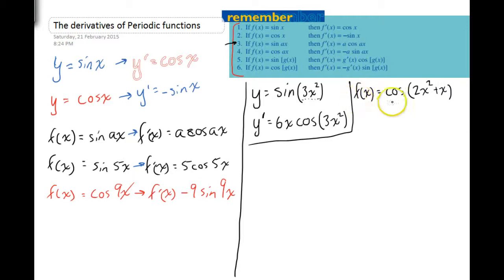So in this one, we have f of x equals cos in brackets 2x squared plus x. So again, we have another function here that we're finding the cos of. That means that the derivative of that, f dash x, is going to be equal to the derivative of whatever is in there. In this case, it's 4x. Don't forget, the derivative of x is 1.